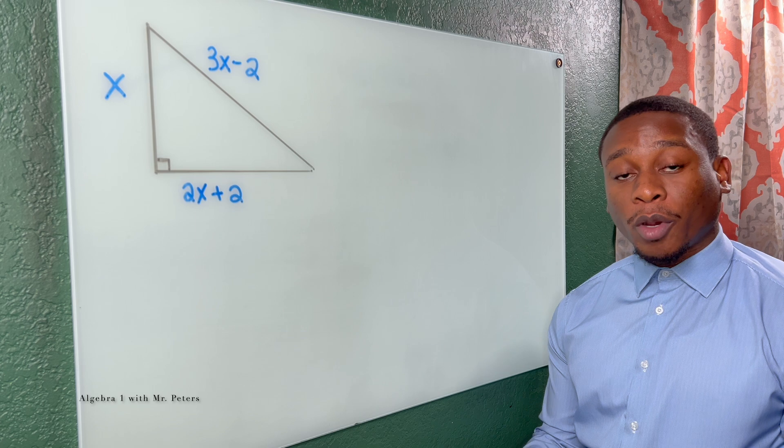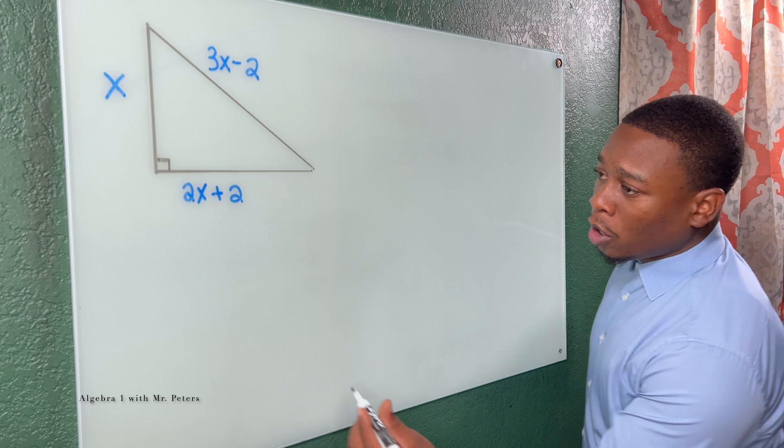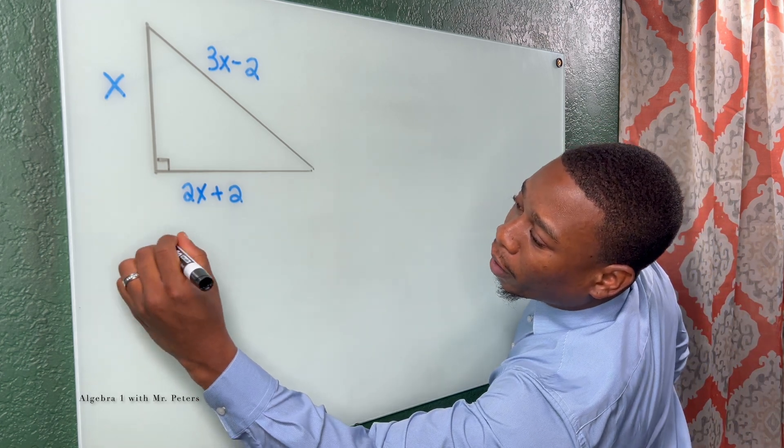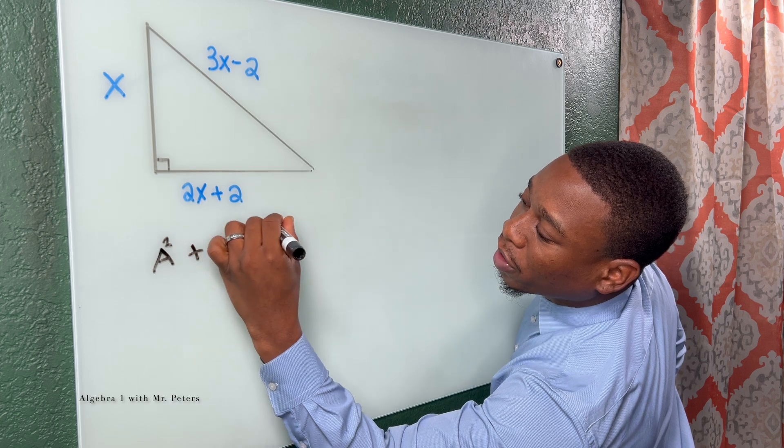When we're dealing with Pythagorean Theorem and quadratic equations, we have to make sure we expand each side correctly. So once we go in, we identify each side: A squared plus B squared is equal to C squared.